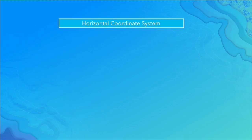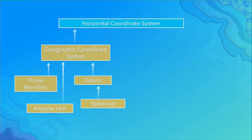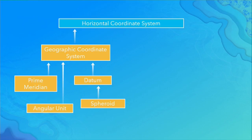What is in a horizontal coordinate system? In a geographic coordinate system, we have a prime meridian — where we measure longitude from. Latitudes are measured from the equator, but longitudes are measured from an arbitrary point, normally Greenwich. We have an angular unit, usually degrees but possibly grads or radians. We have a datum, which contains a spheroid, and the spheroid describes the shape of the Earth — is it a true sphere, an ellipsoid, and what is the flattening?